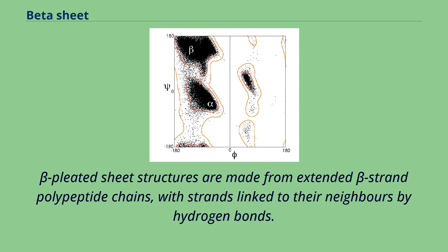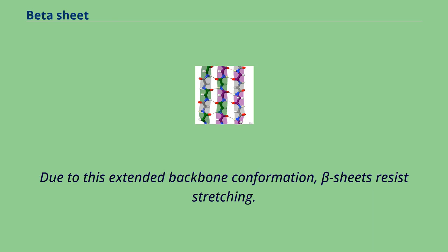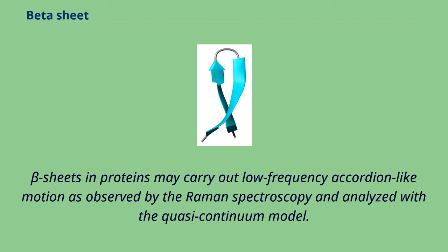Beta pleated sheet structures are made from extended beta strand polypeptide chains, with strands linked to their neighbors by hydrogen bonds. Due to this extended backbone conformation, beta sheets resist stretching. Beta sheets in proteins may carry out low-frequency accordion-like motion as observed by Raman spectroscopy and analyzed with the quasi-continuum model.